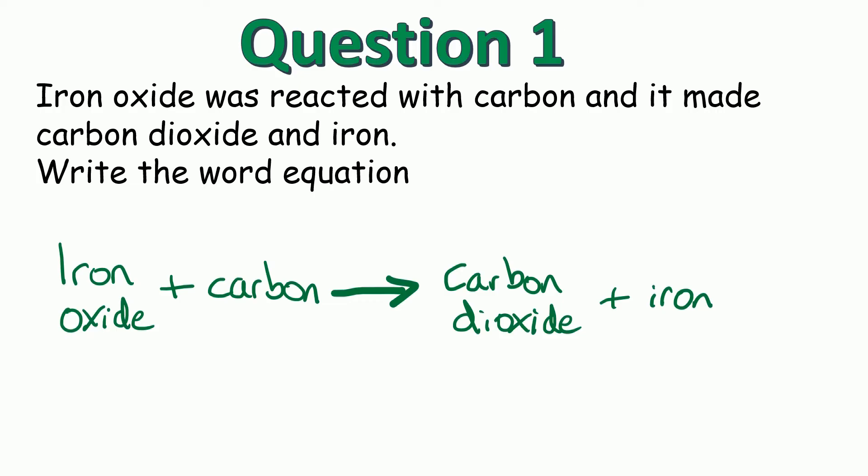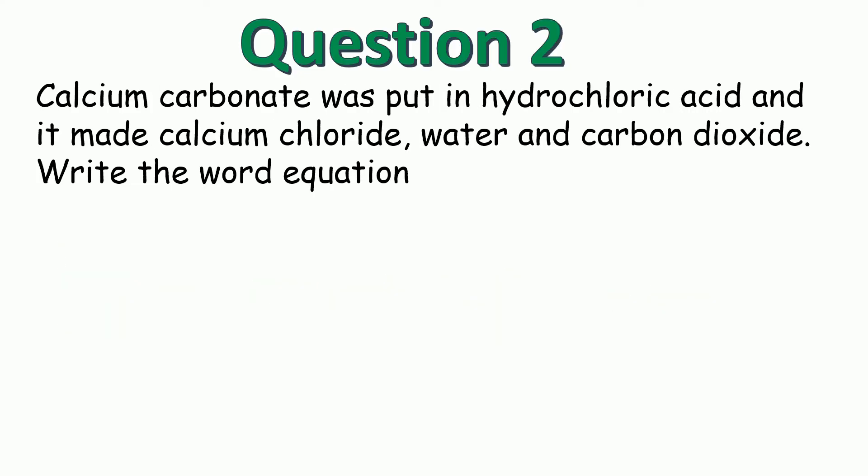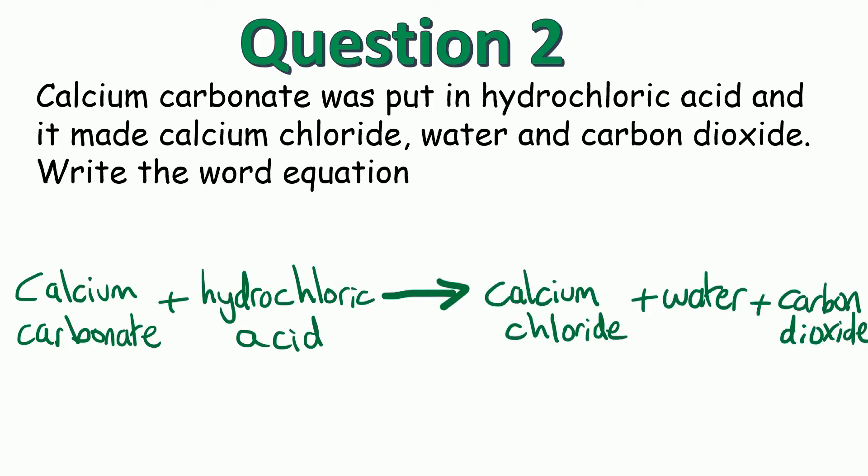In question two, calcium carbonate was put in hydrochloric acid and it made calcium chloride, water and carbon dioxide. Write the word equation for this one. Stop the video while you have a go. There's the arrow in the middle of the page. On the left we've got the calcium carbonate and hydrochloric acid, our starting chemicals. And on the right this time we have three products: calcium chloride and water and carbon dioxide. Notice again how all the reactants are on the left and the products are clearly on the right so we can see what we're starting with and what's being made.